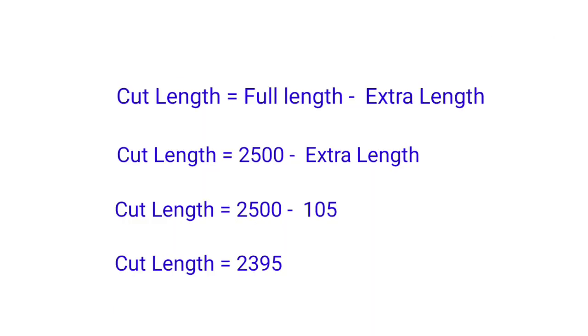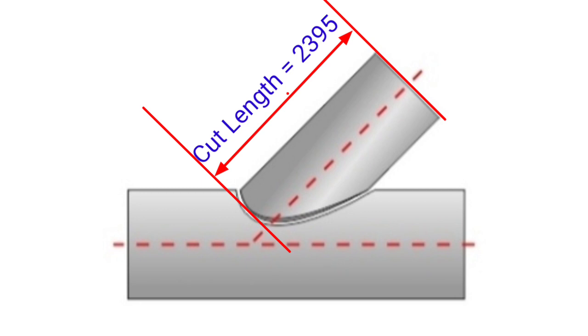Now we come to our final formula. Cut length equals full length minus extra length. Full length value, as per drawing, is 2500mm, minus extra length, which we solved as 105mm. So 2500 minus 105 equals 2395mm. That is the cut length value of pipe.